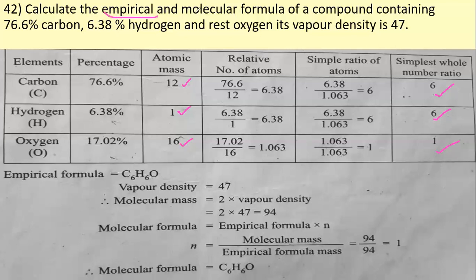Now we have to calculate the molecular formula. The molecular formula is found using N = molecular mass divided by the empirical formula mass. In this question, vapor density is given. Vapor density is the density of a particular gas or vapor relative to hydrogen at the same temperature and pressure.